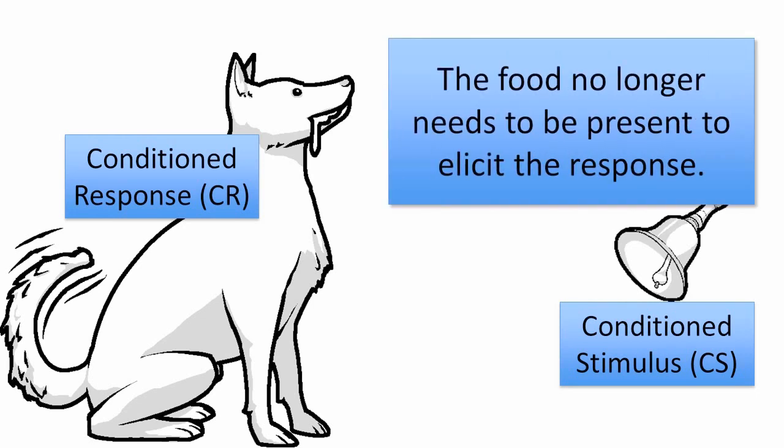The food no longer needs to be present for the dog to act as though food is there. This period of associating the neutral stimulus with the unconditioned stimulus is called the acquisition stage — the period during which the conditioned response is strengthened by repeatedly pairing the neutral stimulus with the unconditioned stimulus. You could also just call this the training period. It's a gradual process: the more you present these two things together, the stronger the conditioned response will be.